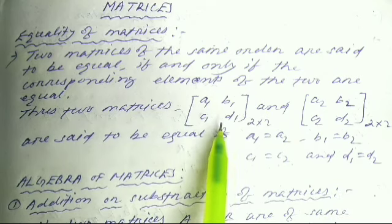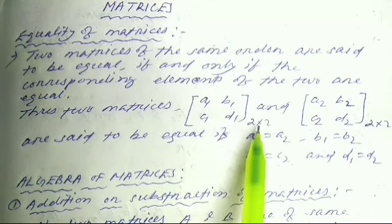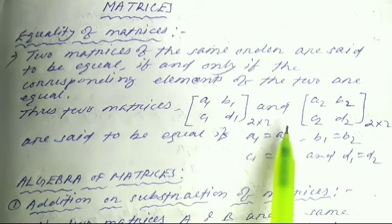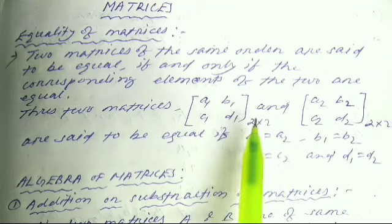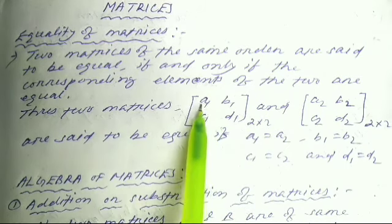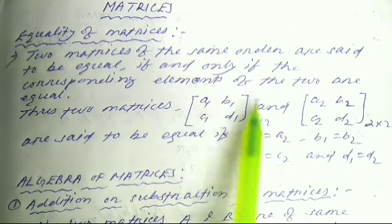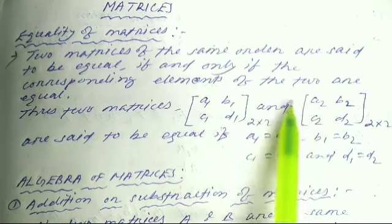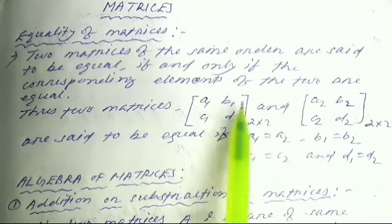This means the two matrices must be of equal order — for example, both 2×2. Then, when they are the same order, the matrix is equal only when the corresponding elements — the same position elements — are equal.